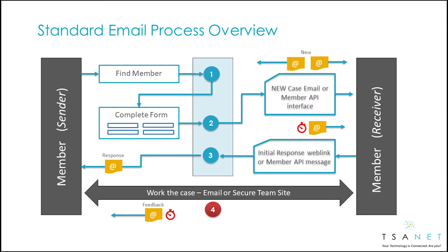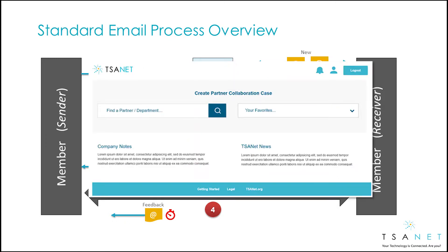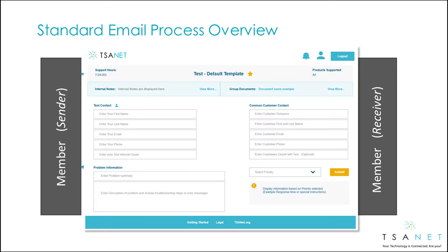Let's take a look at the end-to-end process to better understand how TSAnet Connect works. First, the sender logs into TSAnet Connect and finds a partner. They fill out their process form, select a priority, and hit Submit.